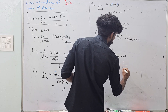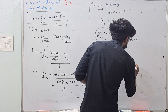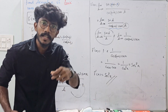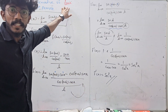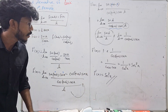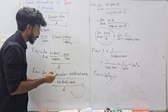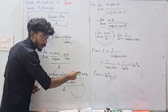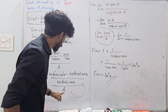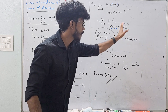So f'(x) = 1/cos²x, which is sec²x. The derivative of tan x is sec²x. That means the derivative of tan x equals sec²x. No doubt.